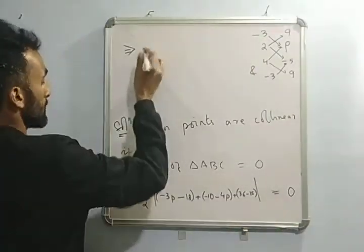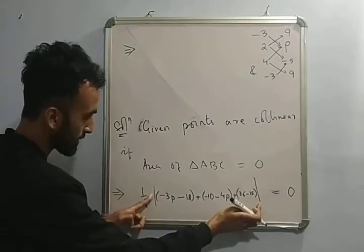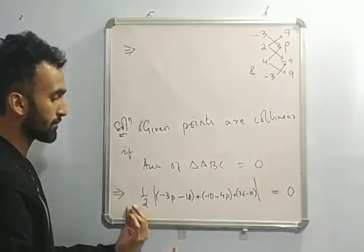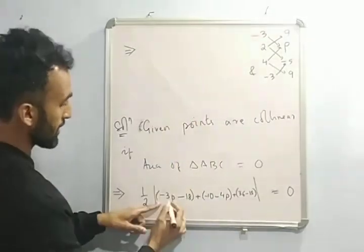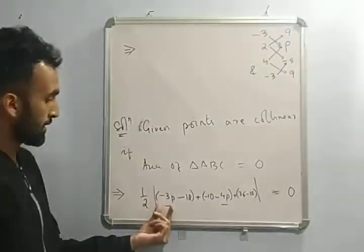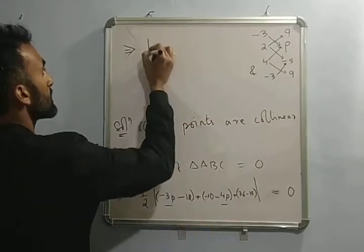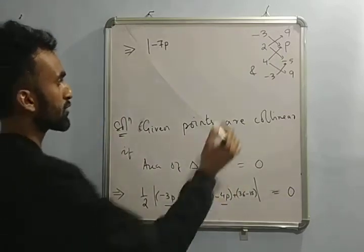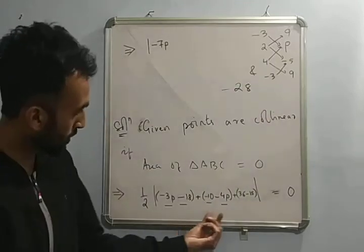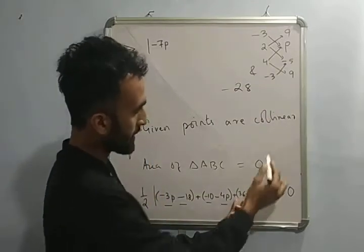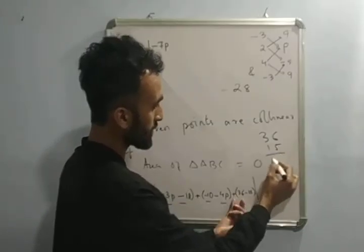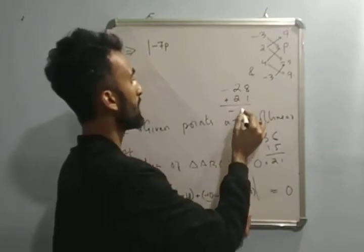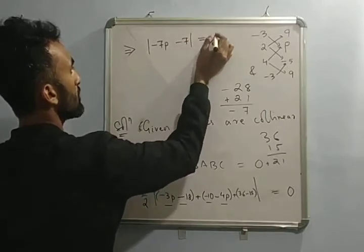Equal to 0 — I have to use throughout. Half is multiplied with this; 2 can go up and multiply with 0, it becomes 0, so we don't need to write half anymore. Solving the inside part: minus 3P minus 4P is minus 7P. Then minus 18 minus 10 is minus 28. And 36 minus 15 is 21. So minus 28 plus 21 becomes minus 7. So minus 7P minus 7 equal to 0.